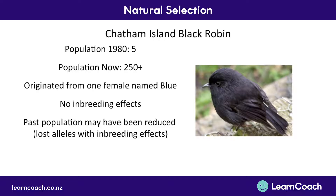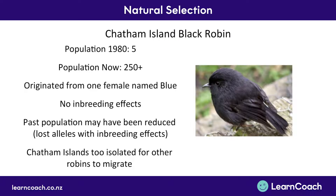Blue must not have had the gene or allele that expressed inbreeding effects, and therefore she wouldn't have passed it on to any of her offspring, meaning the whole population of Chatham Island black robins now have no inbreeding effects — they don't have the allele for it anymore.